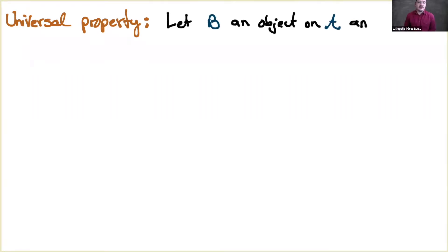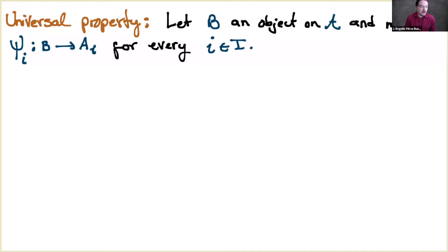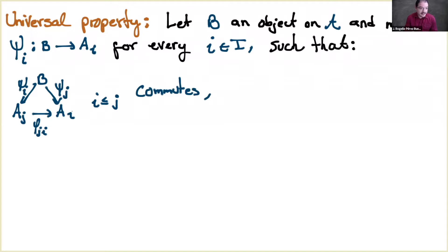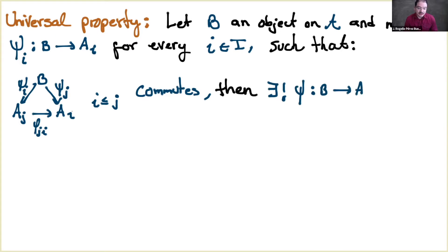The universal property is as follows. Suppose we have B, another object in the category, together with morphisms ψ_i from B to A_i for every i in the index set, such that this diagram is commutative with the φ_i's that come with the projective system. So these are new morphisms from B to A_i, forming a commutative diagram for every i. Then there exists a unique — this is the universal property — a unique φ from B to A.